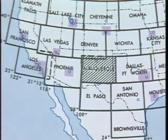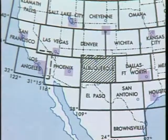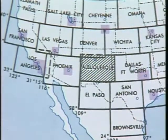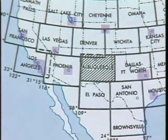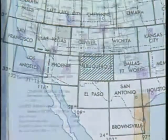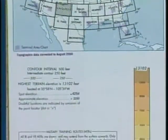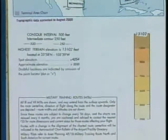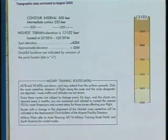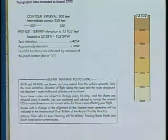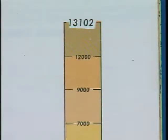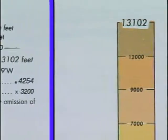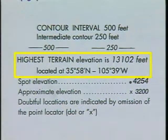Sectional charts show the locations where terminal area charts can be found by outlining the region with a magenta square. Below the US chart index, you can find information on chart elevation. The color bar gives a graphic description of elevation changes; the highest terrain elevation on the sectional is printed at the top of the color bar, and its geographic coordinates are also given.